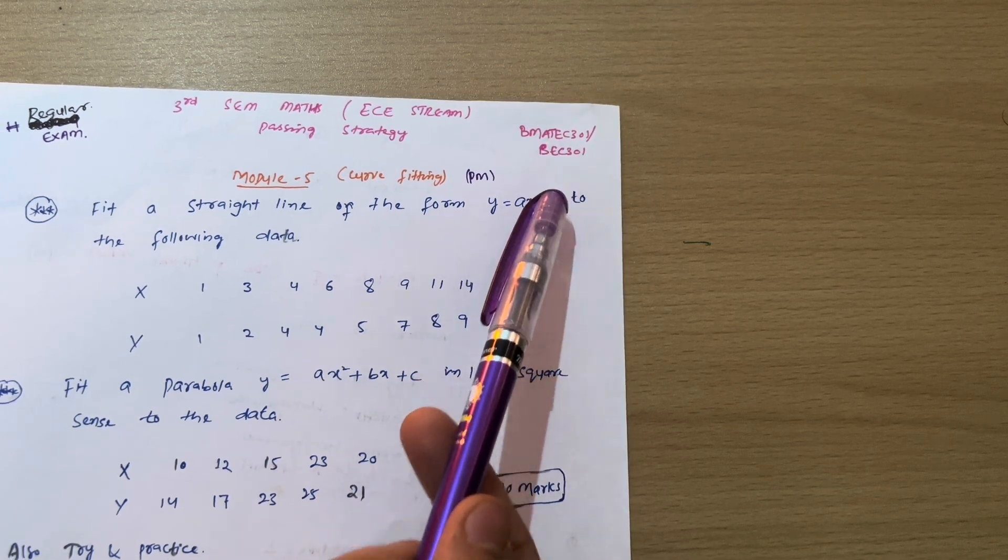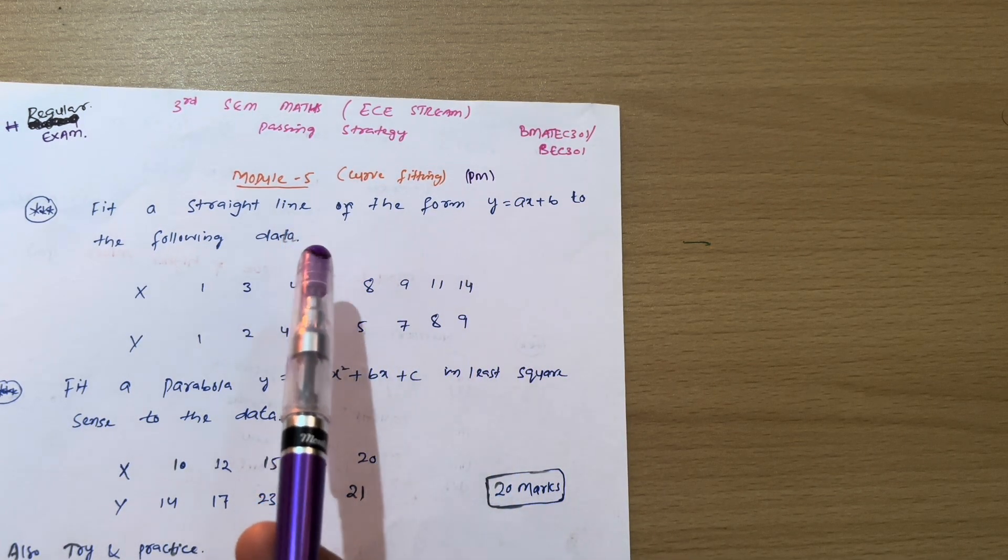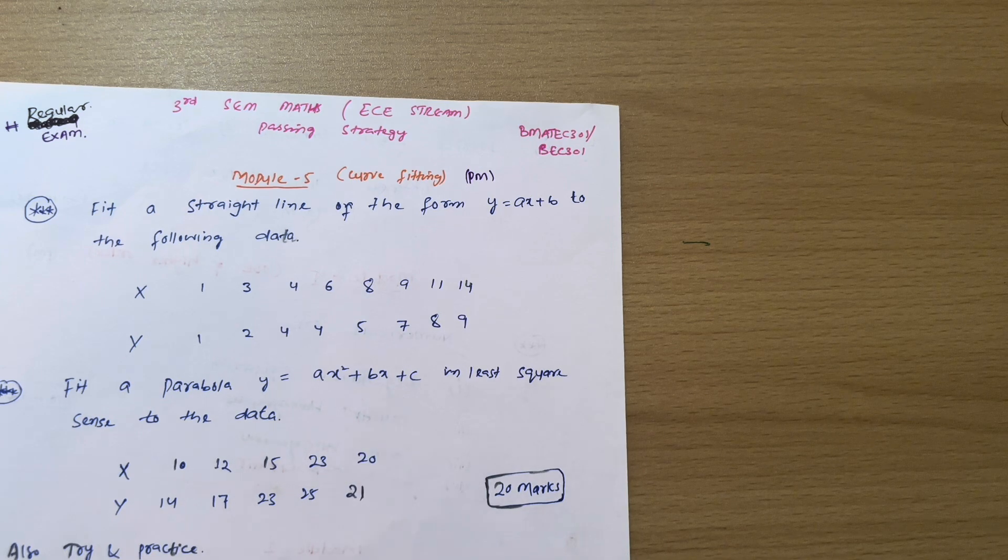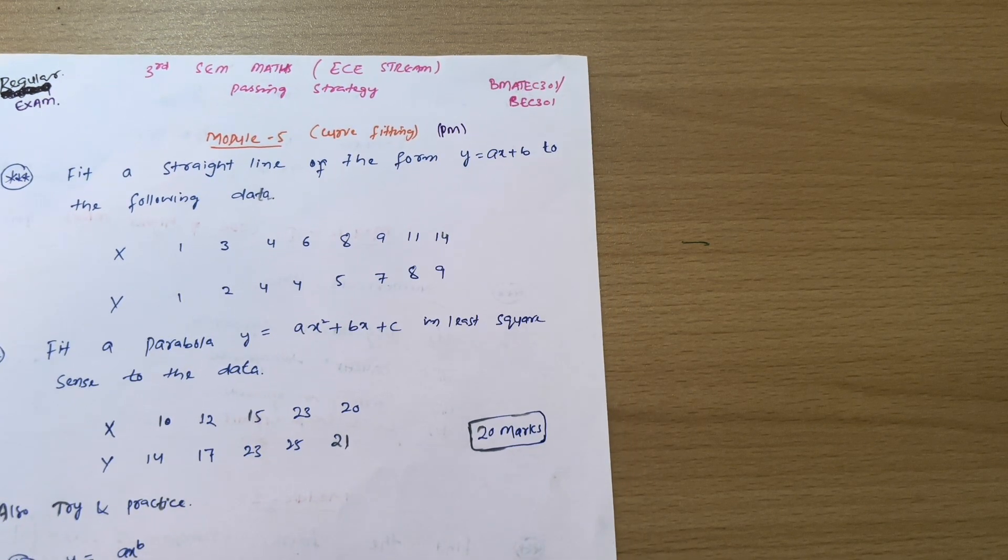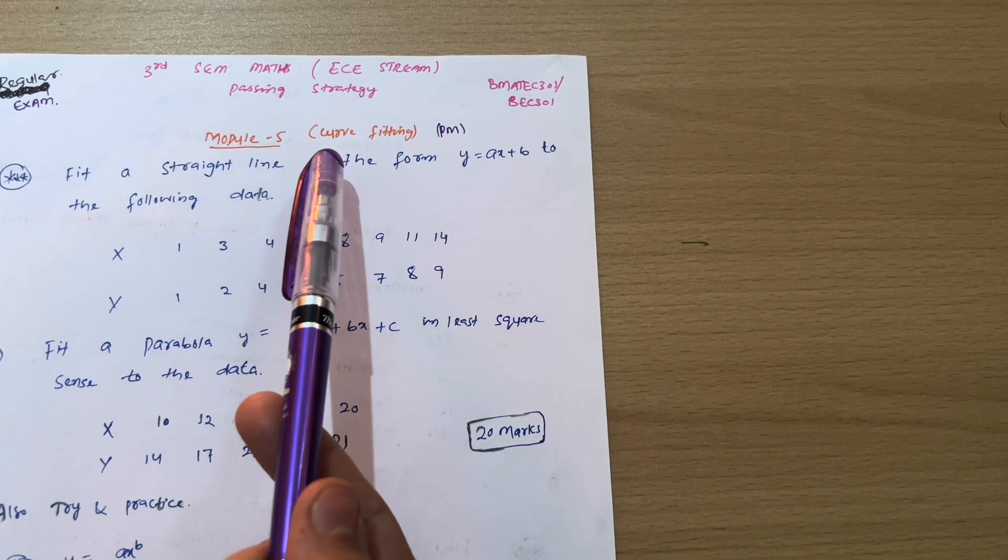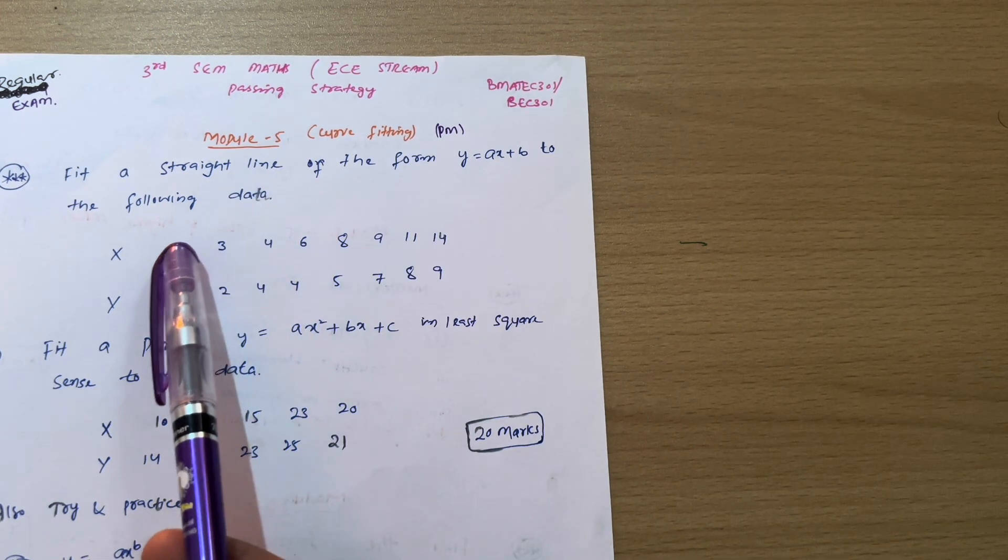BMATEC301 or BEC301 is its subject code, and let me discuss the passing strategy for this particular subject. First of all, we have module fifth which is easier, that is why I am considering this as passing module. It is curve fitting in which we have five concepts.